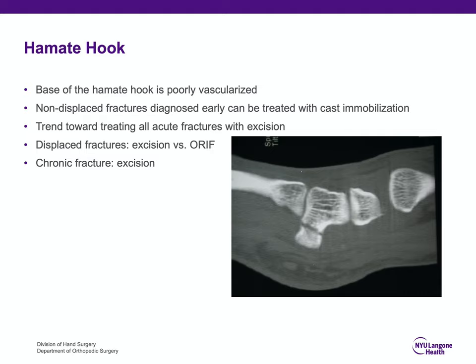When someone has a non-displaced hamate hook fracture, it cannot simply be a short arm cast. It has to be a short arm cast with the thumb and little finger cupped towards each other to keep tension off the transverse carpal ligament, which attaches to the hamate hook. The cast must also have the little and ring finger MCP joints flexed because the hypothenar muscles also originate on the hamate hook. All structures that originate on or attach to the hamate hook must be relaxed for fracture healing.